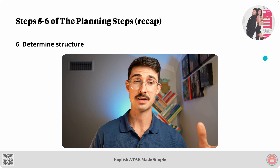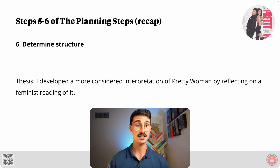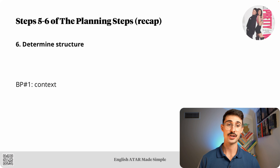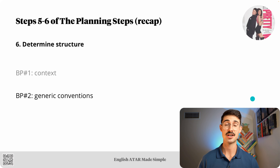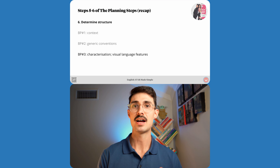That's step five of the planning steps in relation to this question. After that, we looked at the determined structure step — step six, the final step. The PDF study notes for this lesson has replicated the entirety of step six for each example. I'll only refer to the topic of each body paragraph in this video, because the topic of each BP is what is really referred to in the body paragraphs element of an introduction. The textual evidence for each BP isn't mentioned in the intro but analysed in the relevant body paragraph. Our thesis was: I developed a more considered interpretation of Pretty Woman by reflecting on a feminist reading of it. My first body paragraph will focus on context, my second on generic conventions, and my third on characterisation and visual language features.